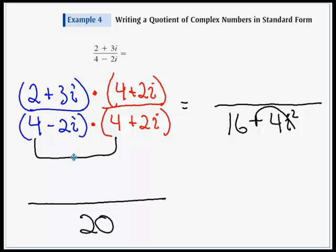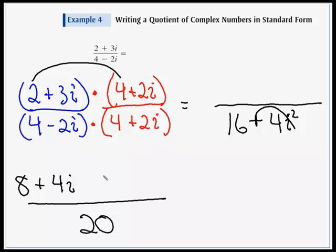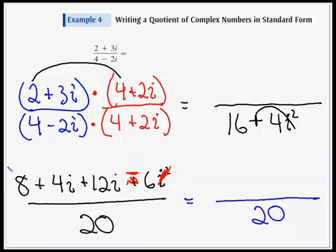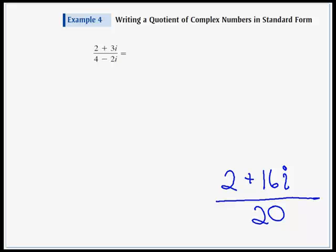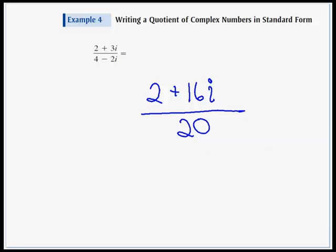Now we FOIL the numerator: first terms give 8, outers give plus 4i, inners give 12i, and the last term 6i squared flips its sign to negative 6. Combining: the real component is 8 minus 6 equals 2, and 4i plus 12i equals plus 16i, giving (2 + 16i) / 20. Every coefficient is divisible by 2, so we reduce to (1 + 8i) / 10.